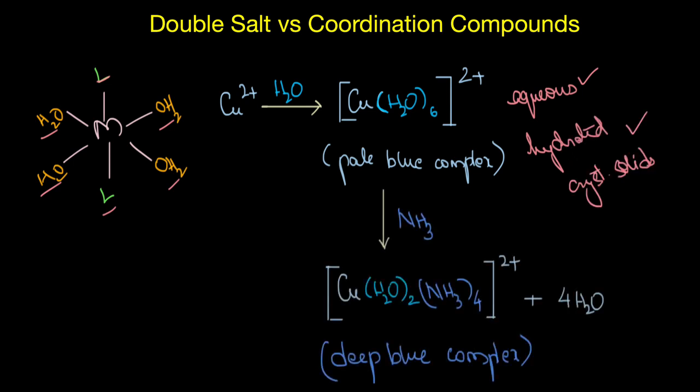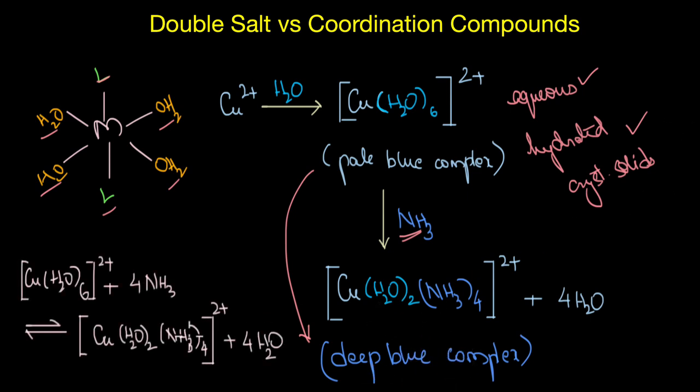If we add ammonia to the solution, then the pale blue color transitions to deep blue color, corresponding to the formation of cupra ammonium ions as shown here. We can see that ammonia replaces the water molecules. Why does this happen? Why ammonia replaces water is something that we will discuss in the upcoming videos.